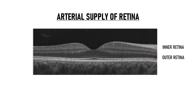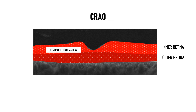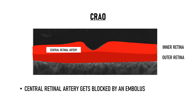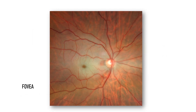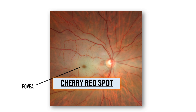If you observe carefully, you will notice that at the fovea, these inner retinal layers are absent. Only the outer retinal layers are seen at the fovea. In central retinal artery occlusion, the central retinal artery gets blocked by an embolus, causing ischemia of the inner retina. The inner retina turns pale and edematous, while there is no edema at the fovea since the inner retinal layers are absent here. Therefore, the vascular choroid and RPE shine through the fovea, which appears reddish brown, giving the contrasting appearance of a cherry red spot.